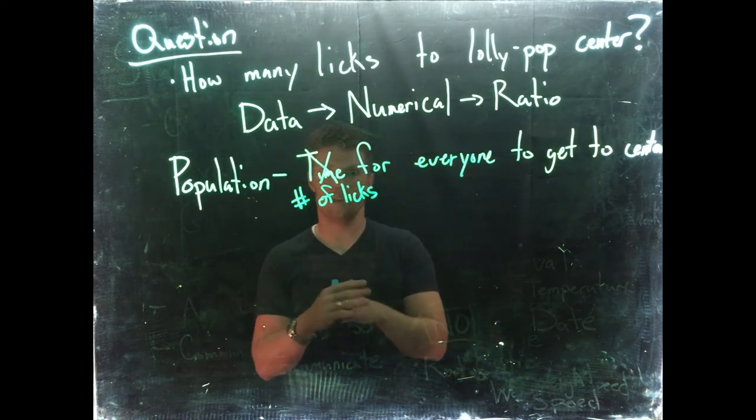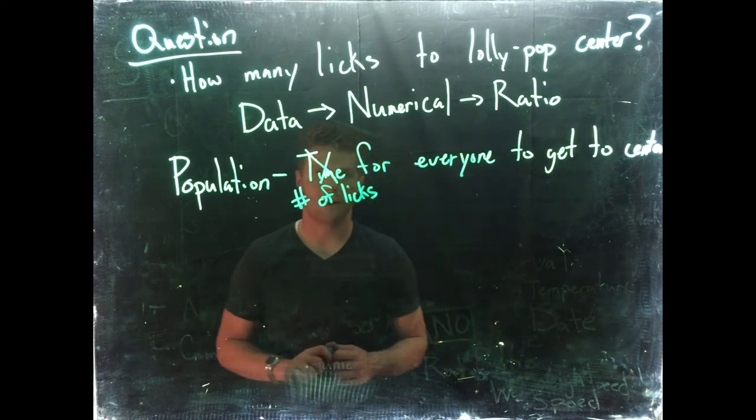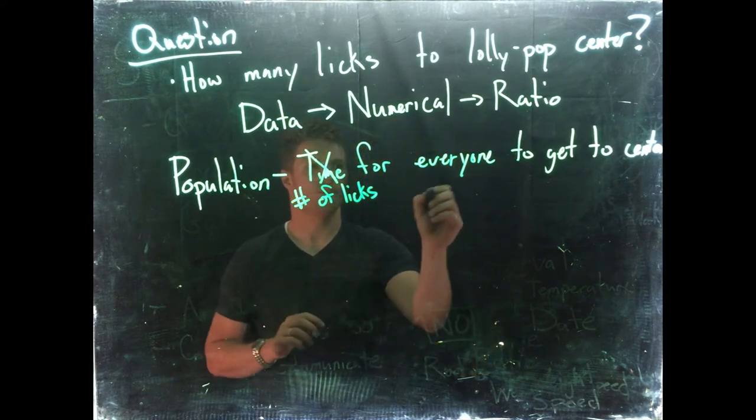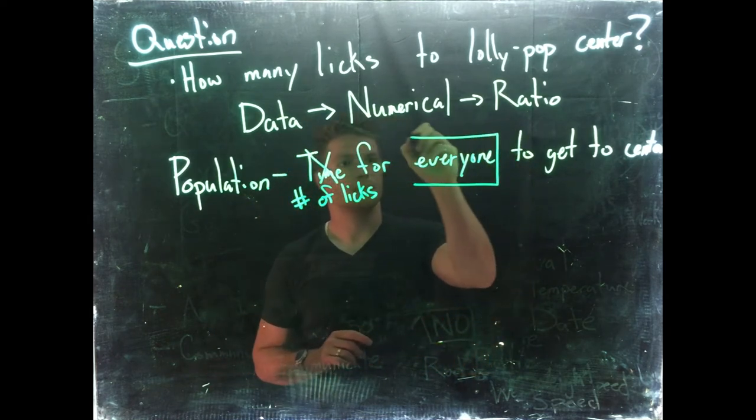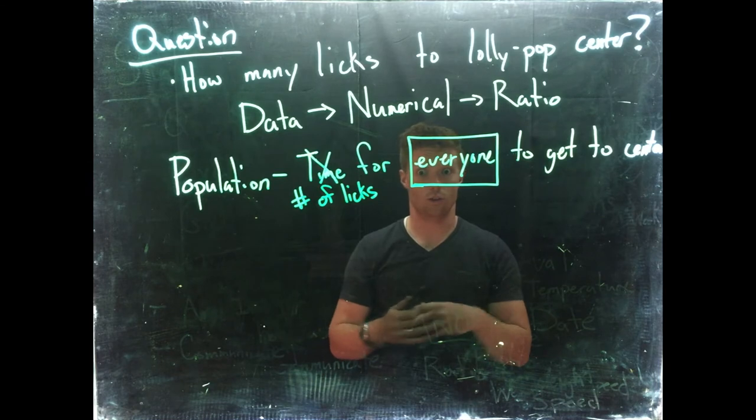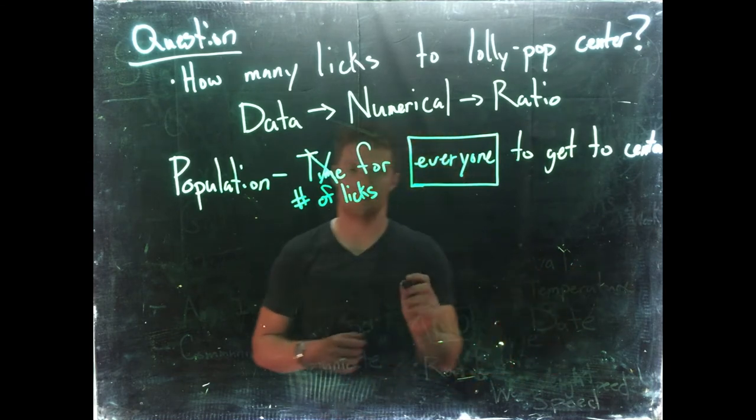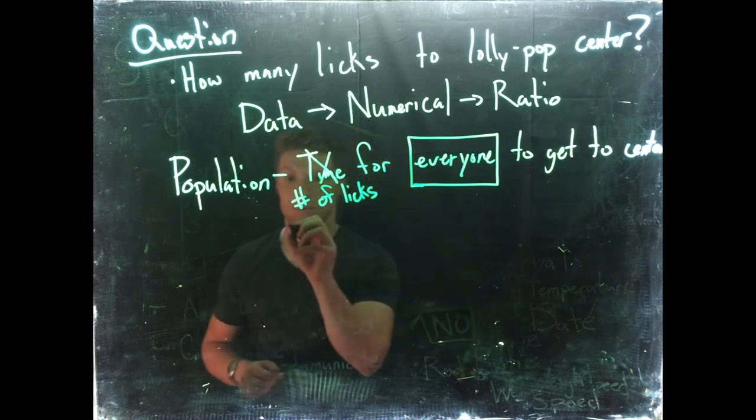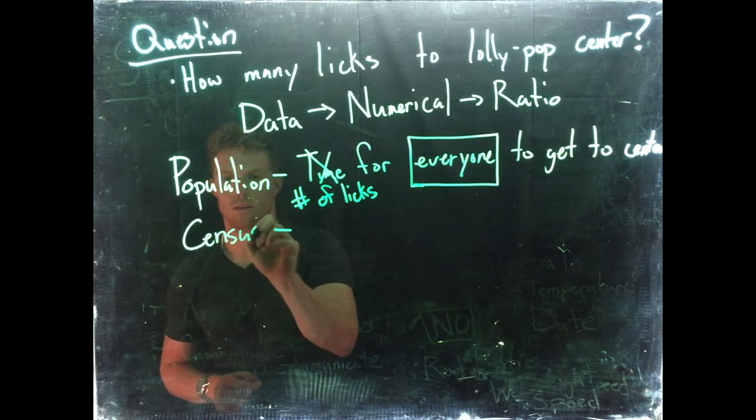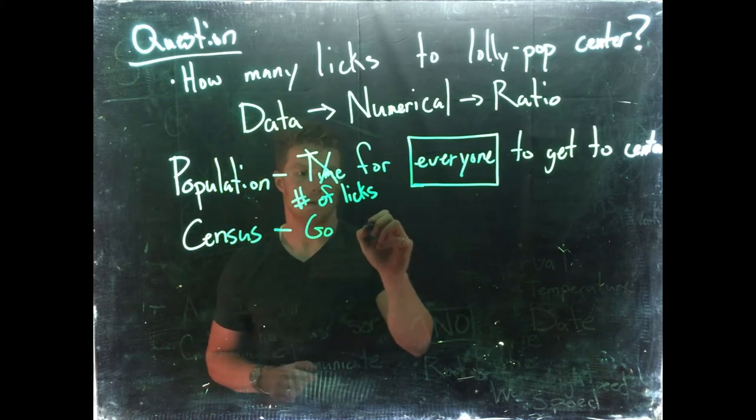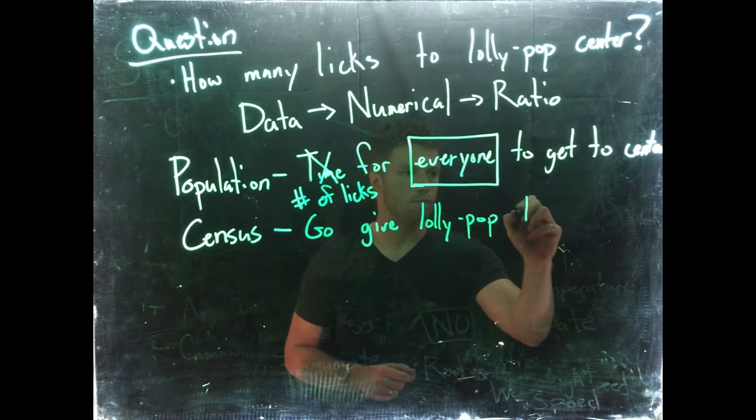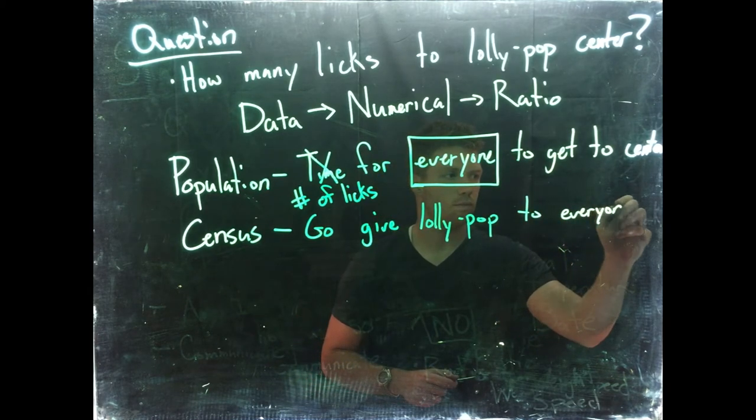Okay, so that's a population. If we give a lollipop to everybody, we can figure out how many licks it would take to get to the center. So the population number of licks, and this would be everyone. It's ridiculously hard to get to everyone. If we were to go into the whole world, give everybody a lollipop and make them lick it, that would be very hard. But if we did that, that would be called a census.